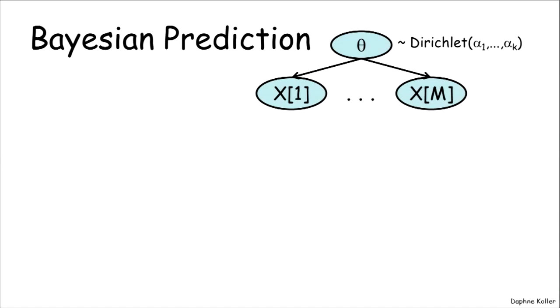So here we have a parameter theta, which initially was distributed as a Dirichlet with some set of hyperparameters and let's imagine that we've seen m data instances x1 up to xm.